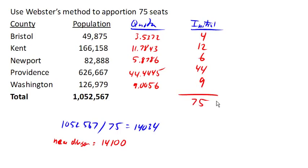Like Jefferson's method, Webster's method does carry a bias in favor of large states, but because of the rounding, that bias is diminished — it tends to be a little bit more unbiased. So there is our allocation using Webster's method.